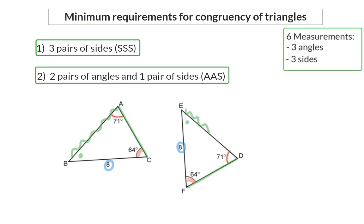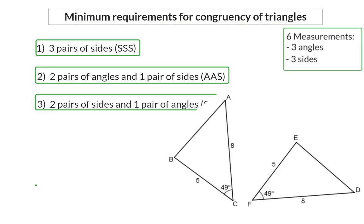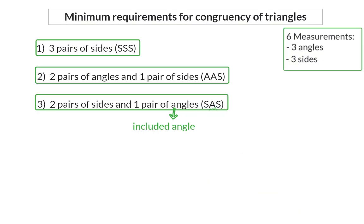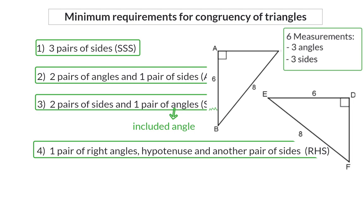A third option for minimum requirements is two pairs of sides and one pair of angles. Here we have two pairs of sides that are equal and also a pair of angles. In this minimum requirement, it is very important that the angle is an included angle — meaning it lies in between the two sides that you have. That is why when writing the reason, we also put the angle in between our two sides. The fourth and final option is when we have a right angle, the hypotenuse, and another pair of sides. In this case, because the angles are right angles, it does not have to be the included angle.